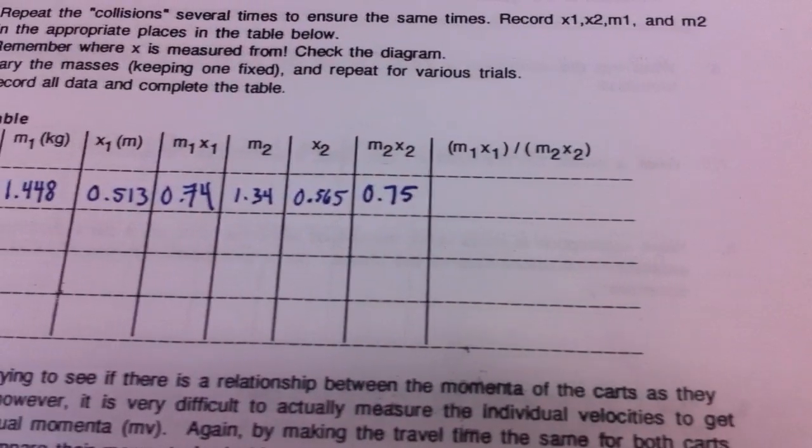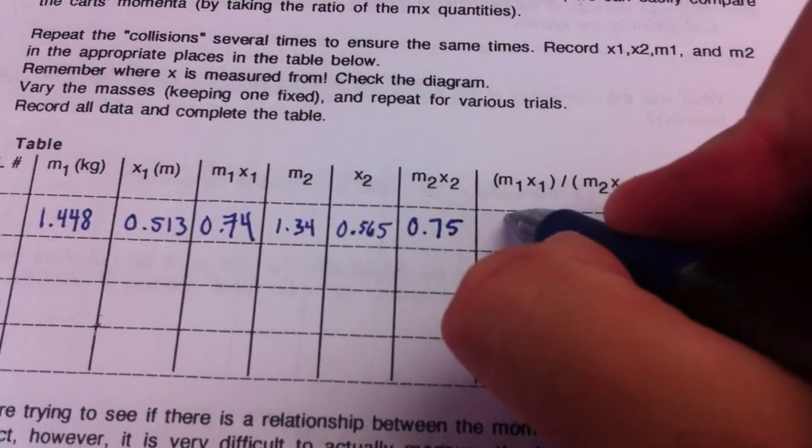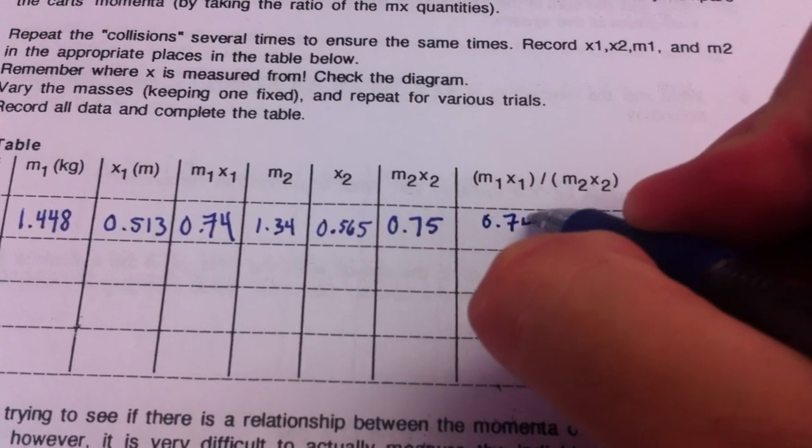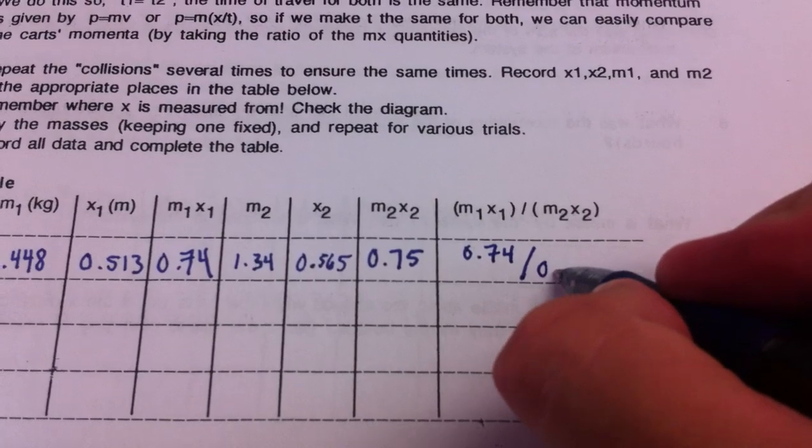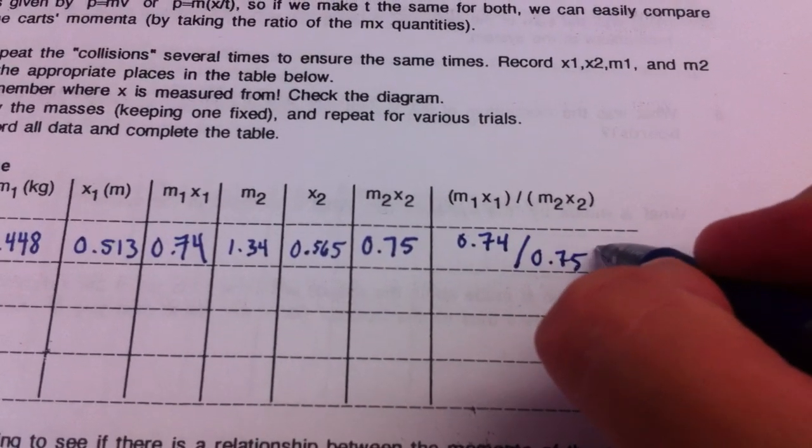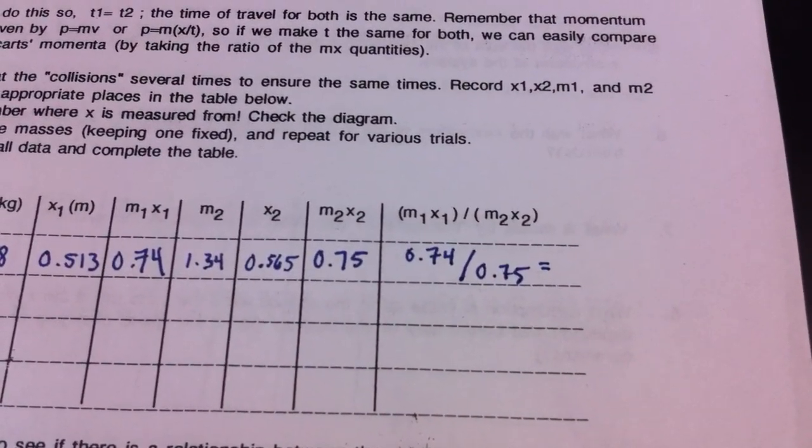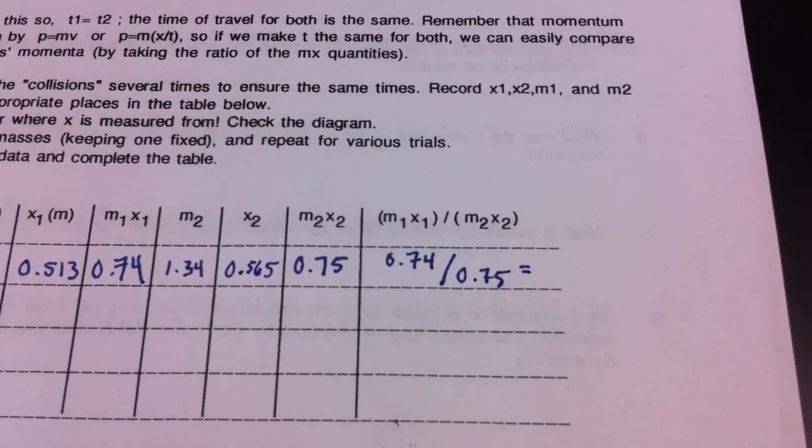So the third column that he's going to do right now, he's going to divide the two momenta. And when you divide the two, if the momentum of each are the same, their quotient will be equal to one or really close to it.